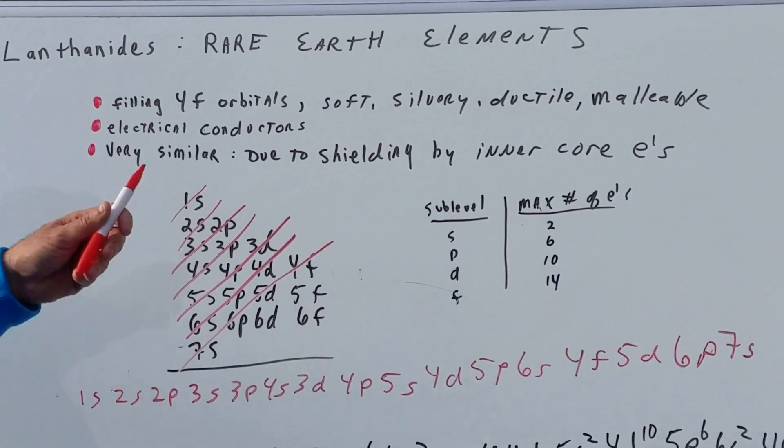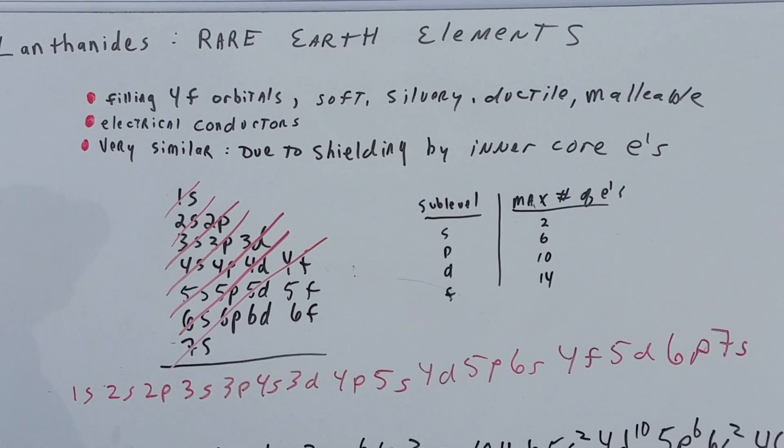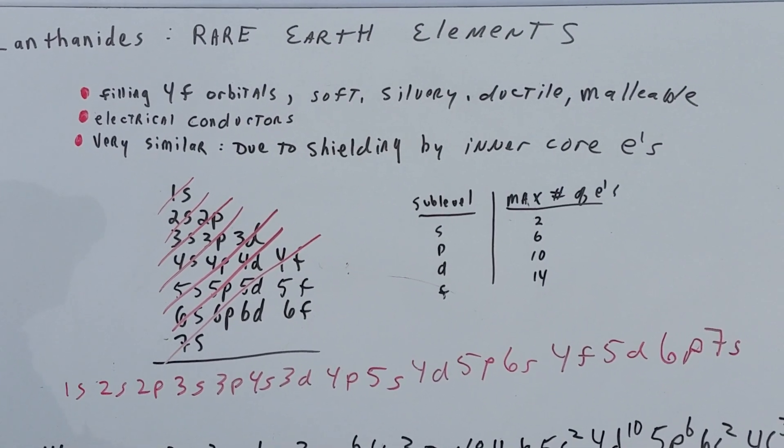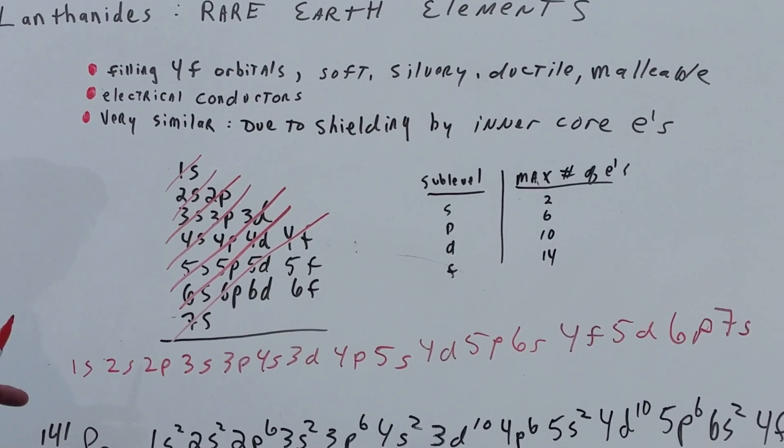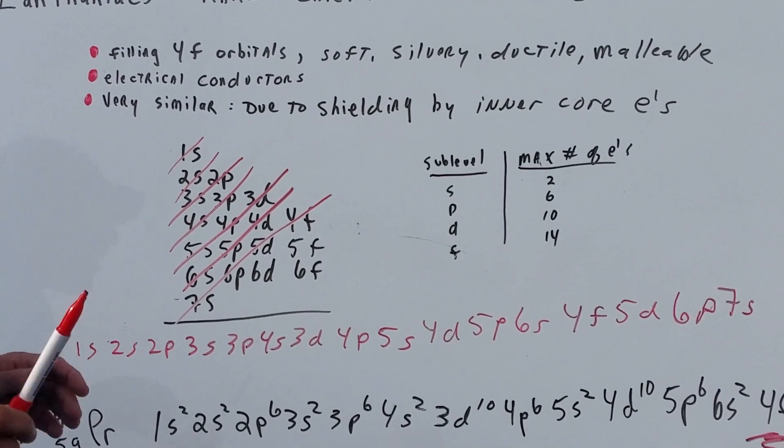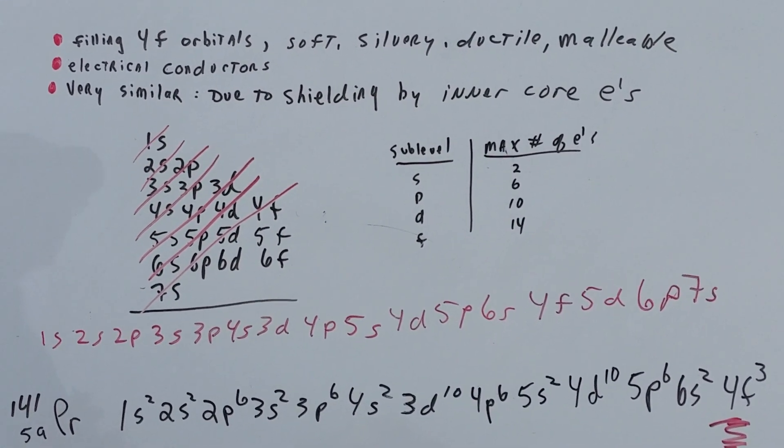Now the lanthanides are gonna be filling the 4f orbitals. They're very soft, they're silvery, ductile, malleable. They are reasonably good electrical conductors and they're all very similar in properties. And that's due to the shielding by the inner core electrons.